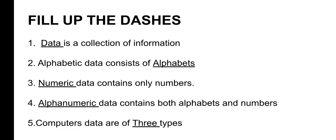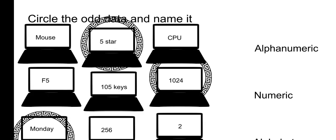Fifth blank: computer data are of three types. There are three types of data: alphabetic, numeric, and alphanumeric. We saw a detailed explanation in the last video.